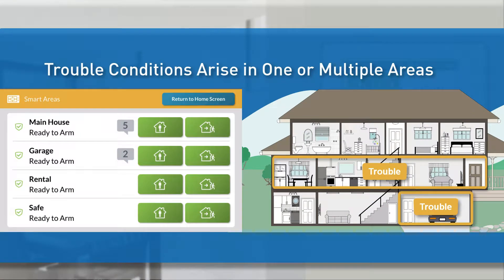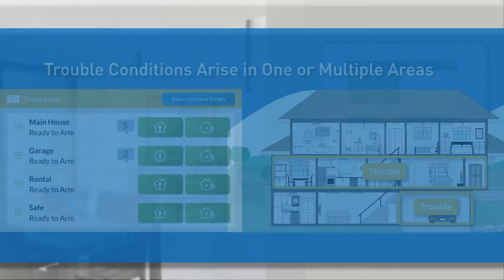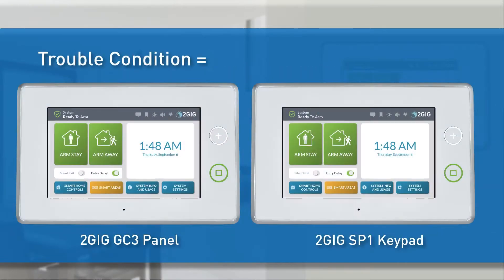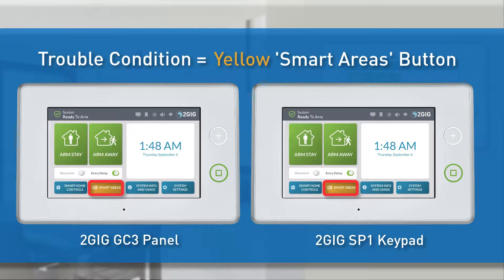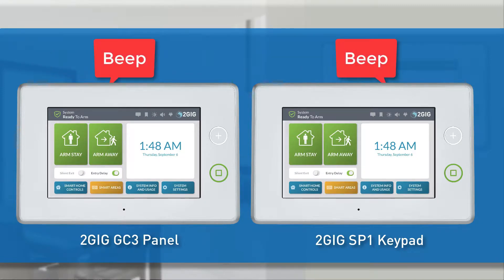Trouble conditions may arise in one or multiple smart areas monitored by a 2GIG GC3 security system. When a trouble condition exists, the smart areas button will turn yellow and the panel or SP1 keypad will periodically beep to let the user know there is a trouble condition.